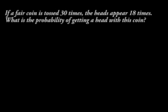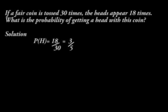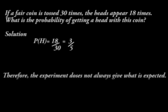For example, if a fair coin is tossed 30 times and heads appear 18 times, what is the probability of getting a head with this coin? The solution is P(H) = 18/30, which is 3/5. Ordinarily, for a fair coin, the head is expected 15 times, making the probability 15/30, which is a half. Therefore, an experiment does not always give what is expected.